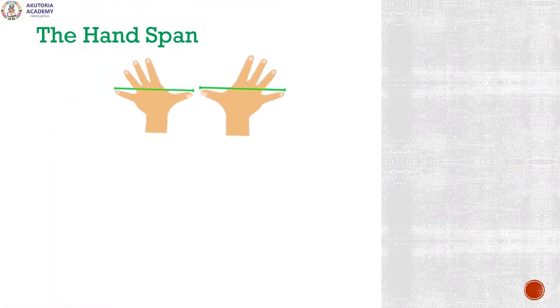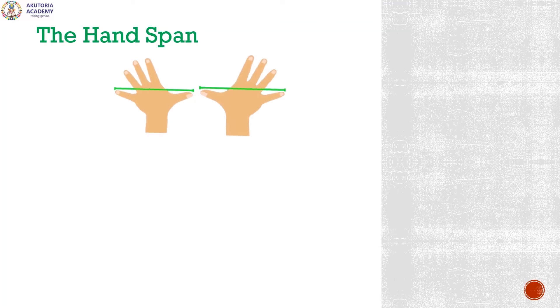The hand span. Whenever we measure these things using our hands, the unit is the hand span. Short distances could be measured using our hands, short distances like the length of the dining table or the length of our notebooks.